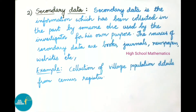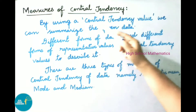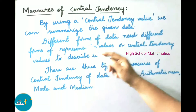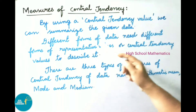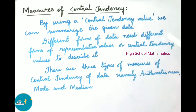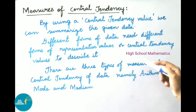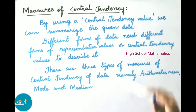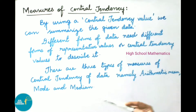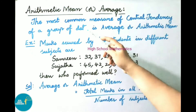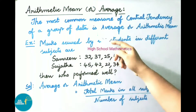Now, measures of central tendency. By using a central tendency value, we can summarize the given data. Different forms of data need different forms of representative values to describe it. There are three types of measures of central tendency: first, arithmetic mean; second, mode; and third, median.